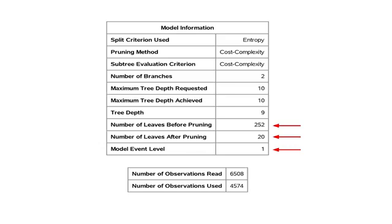Notice too that the number of observations read from my dataset was 6,508, while the number of observations used was only 4,574. That represents the number of observations with valid data for the target variable and each of the explanatory variables. Those observations with missing data on even one variable have been set aside.